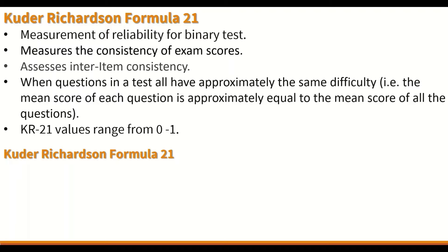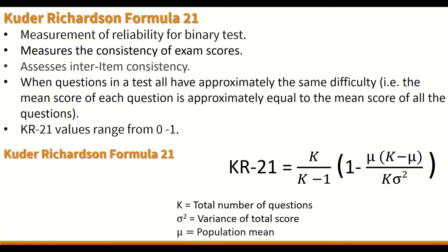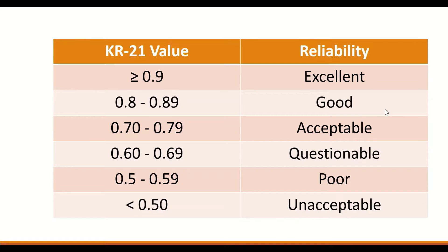The Kuder-Richardson Formula 21 is: KR-21 = (K / (K − 1)) × (1 − (mean × (K − mean)) / (K × variance)). K stands for the total number of questions, variance is the variance of the total score, and mean is the mean of the population.